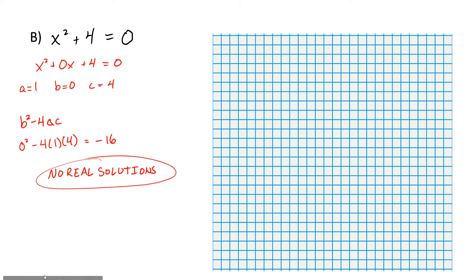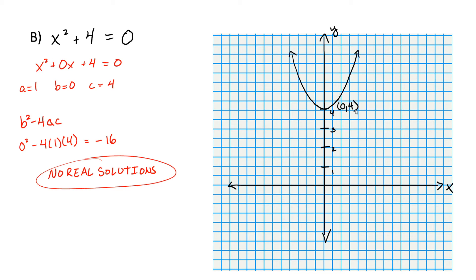Now let's take a look at what's going on graphically here, so we can see why there aren't any real solutions. The graph of this quadratic is going to look something like this. We have a y-intercept at the point 0, 4, but we don't intersect the x-axis anywhere, and that's why there are no real solutions to this problem.